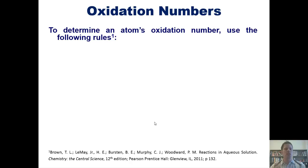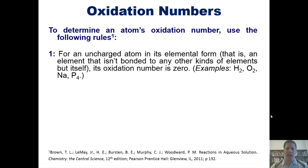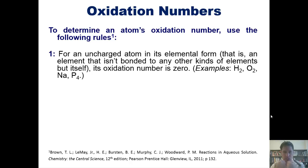To determine an atom's oxidation number, we have to use the following rules. One: for any uncharged atom in its elemental form — that is, an element that isn't bonded to any other kinds of elements except for itself — its oxidation number is zero. Examples include H2, O2, sodium, or P4. In these examples, we sometimes have two or more elements bonded together, but all of those elements are the exact same kind of element bonded to each other — that is, two H's or two O's or four P's or a single Na. If you have any of these substances all by themselves, no charge, their oxidation number is zero.